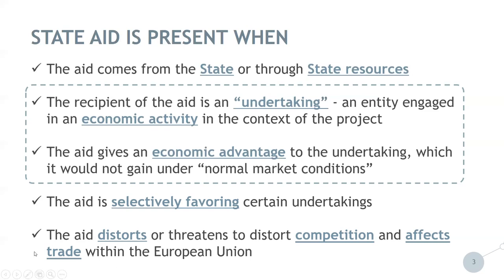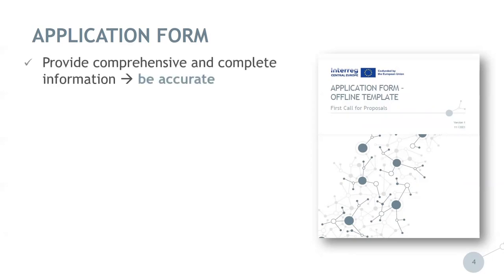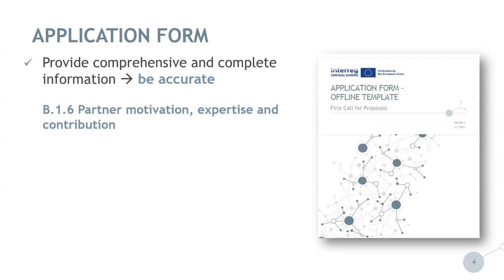In order to assess the presence of State Aid in projects, information provided in the application form is very important. Therefore, project applicants are asked to provide comprehensive and complete information. We draw your attention to section B.1.6, where next to the partner's thematic competences and experience, please also provide full information on the main business of the partner organisation, as well as whether it normally performs economic activities — that is whether it offers goods or services on a market. Remember that not only profit-making companies perform economic activities. Make sure that the role, involvement, contribution, and main activities of the project partner in the project proposal are well described.